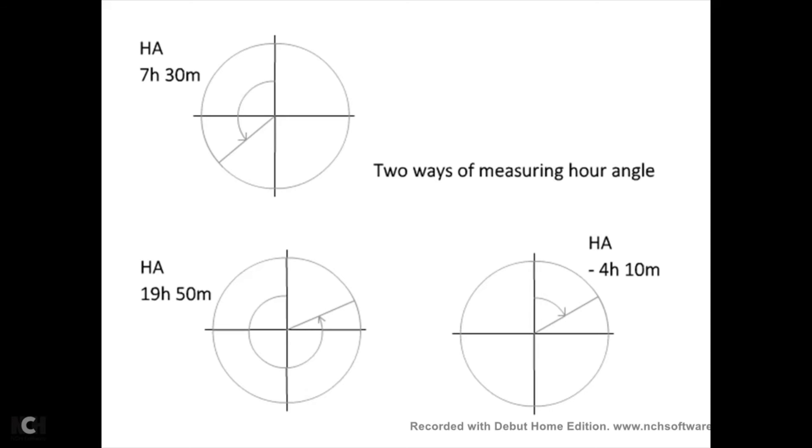So there's two different ways. I did notice that the new version of Stellarium now gives the hour angle for stars, and they use the system on the left. On Stellarium, they would give the hour angle of the star as being 19 hours 50 minutes, although I do think the system on the right, where it's positive and negative, is a more traditional way of doing it.